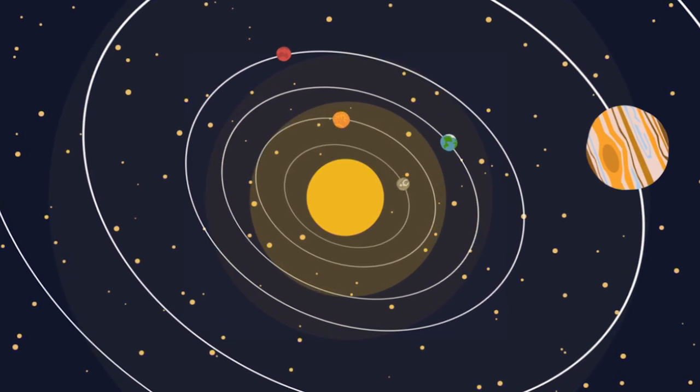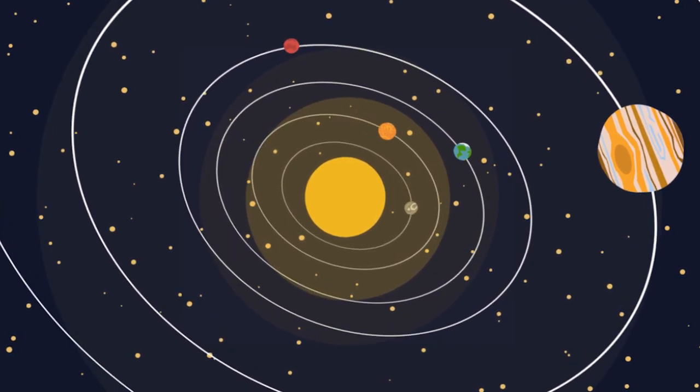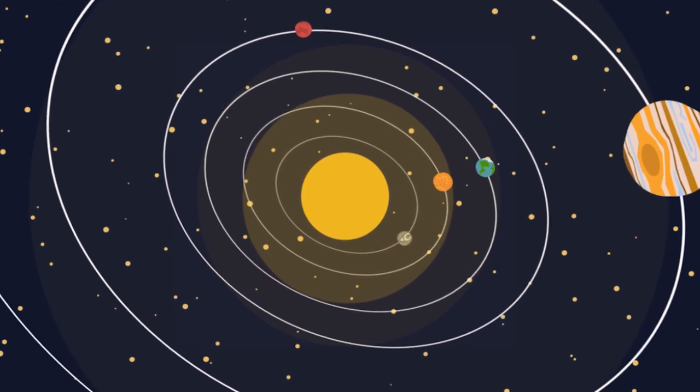Our sun is, at least, a second generation star, which means that all the atoms in the solar system were created in an older star.